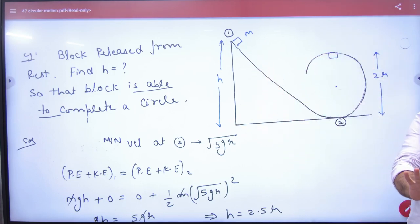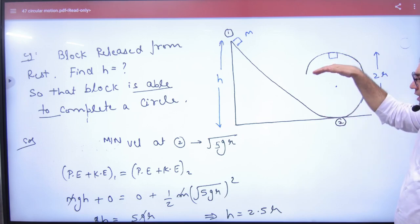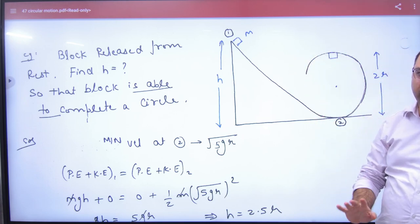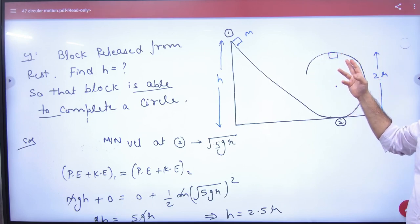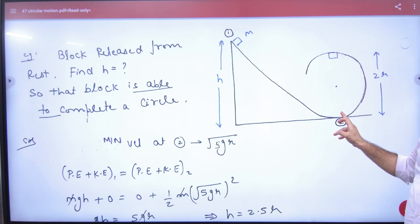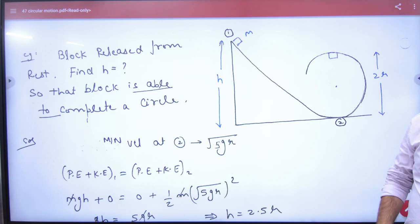That will complete. This is a minimum case - just minimum height to complete the circle. So if you have height here, the velocity at top should be √(gr). Circular motion problem, very simple.